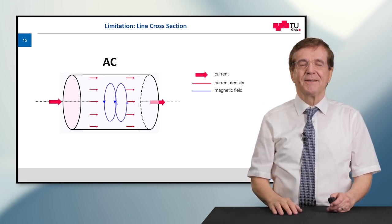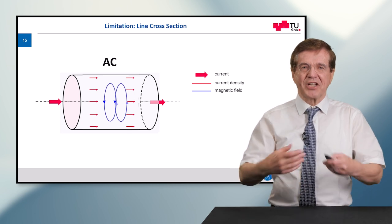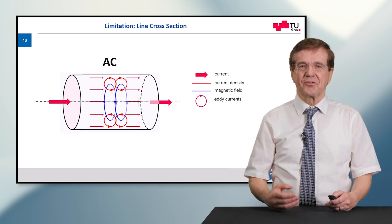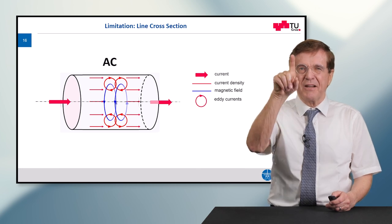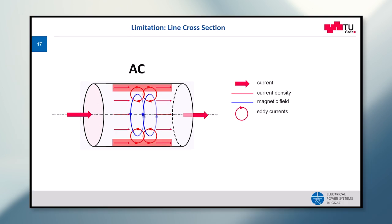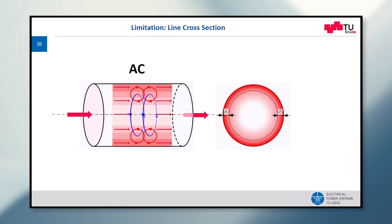Now when we come to AC, this electromagnetic field changes and it generates the so-called eddy currents, which are given as little red circles. And if you watch carefully, for example at the top of this drawing, you see current flow. So this means altogether the current density is high at the outer fringes and is low at the center of such a line.